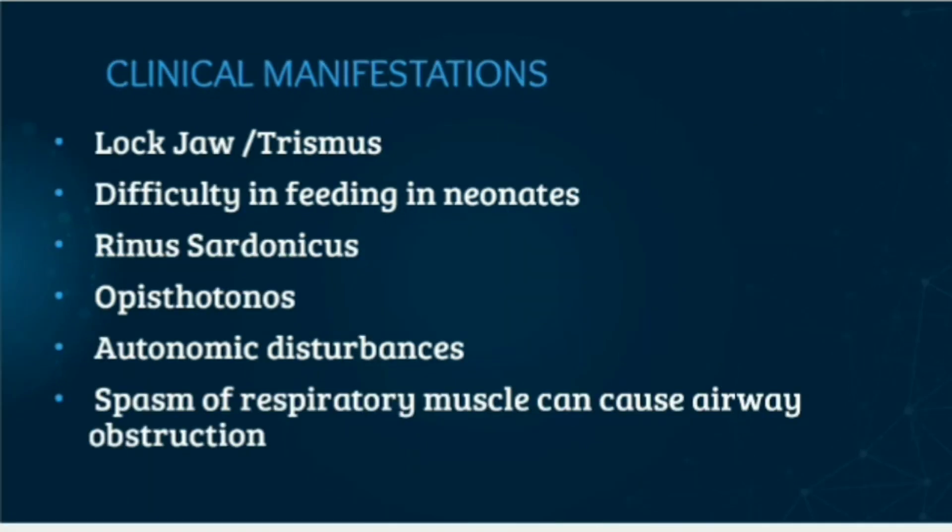Autonomic disturbances are maximal during the second week of severe tetanus, characterized by low or high blood pressure, tachycardia, intestinal stasis, sweating, increased tracheal secretion, and acute renal failure.